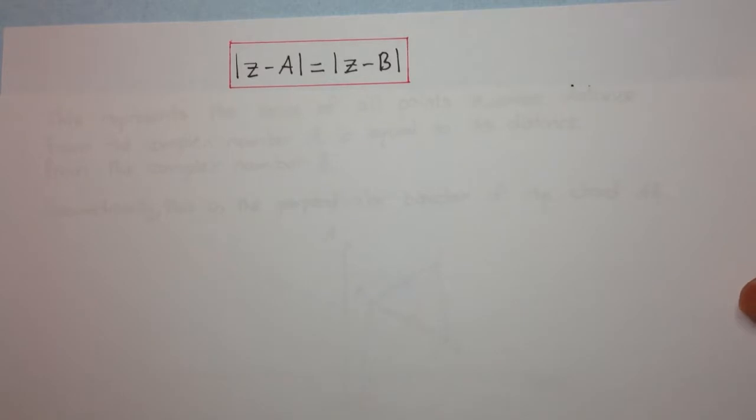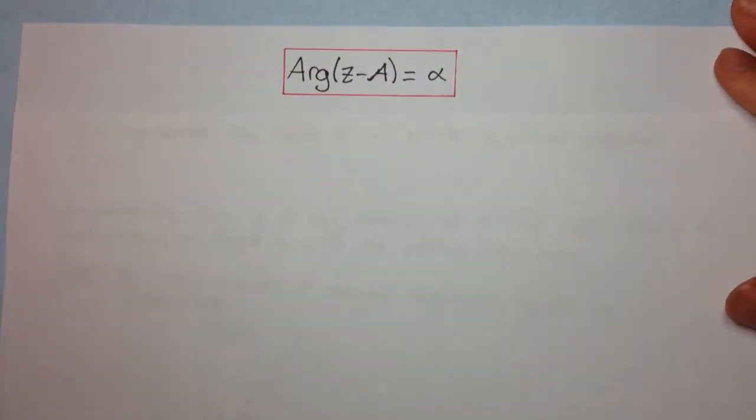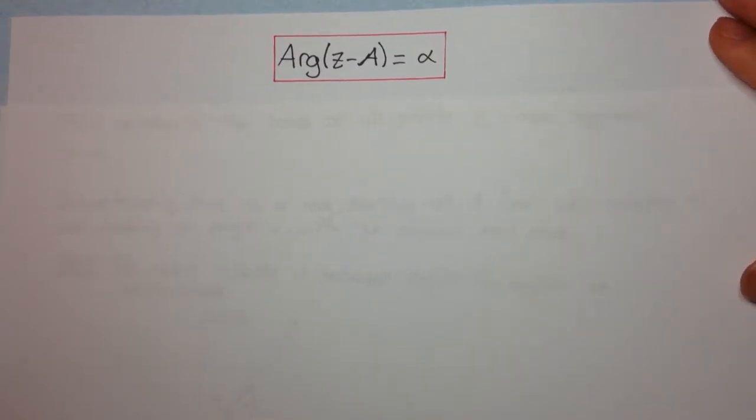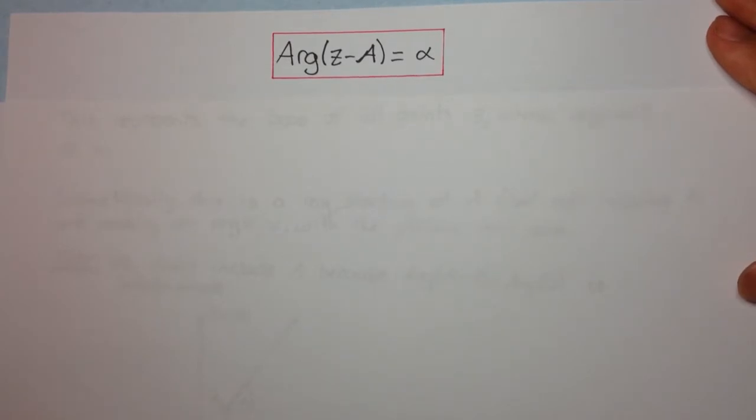Okay, let's have a look at another example. And don't feel too worried if you're not understanding straight away, because when we see examples, then it will become much more clearer. Okay, so in this standard type, it says that the argument of z minus a equals α.